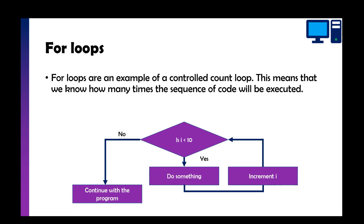Here's a flowchart of a for loop. As we said, it's a count control loop so we know how many times a sequence of code will be executed. For example, i starts at zero — and i is just a variable name, most programmers use i by convention as it stands for 'index', though you could call it anything. The condition checks: is i less than 10? If it is, we do a piece of code and then increment i by one, though it doesn't have to increment by one.